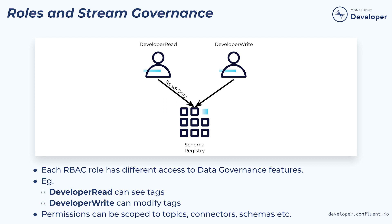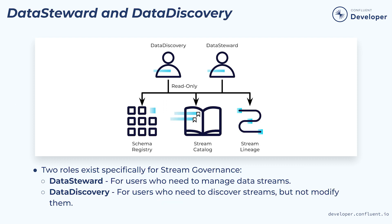These roles can be scoped to individual topics, connectors, schemas, etc., which allows a high degree of customization. The data discovery and data steward roles are of particular interest for stream governance. These roles are designed for users who need the kind of access we've been discussing in this course. The data discovery role is for users who need the discoverability provided by tools such as the stream catalog. The data steward role is for users who need to actively manage the data streams. For a detailed look at each of the roles and what permissions they have, make sure to check out the Confluent Cloud documentation.